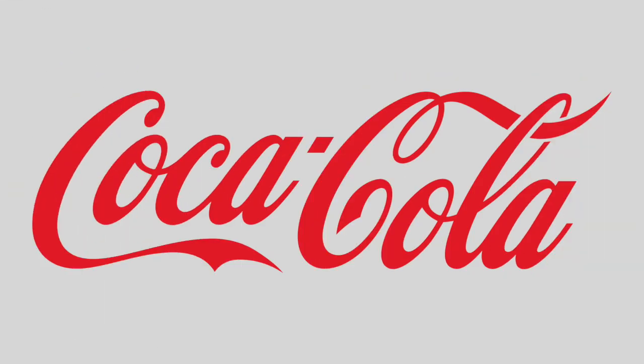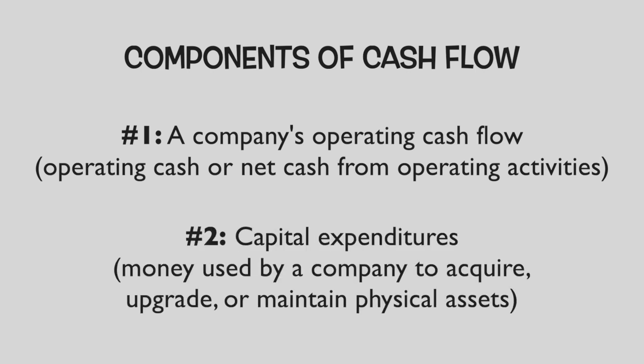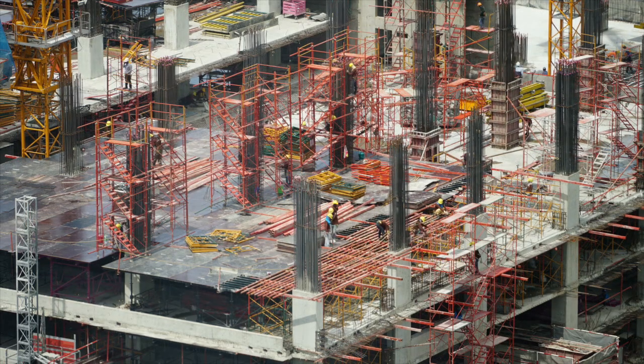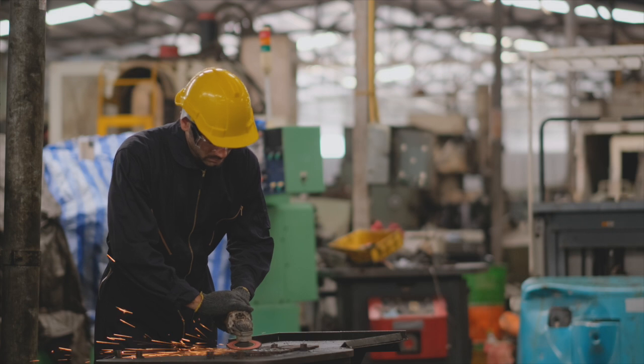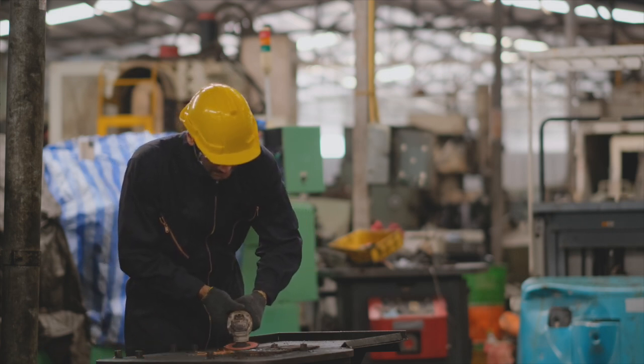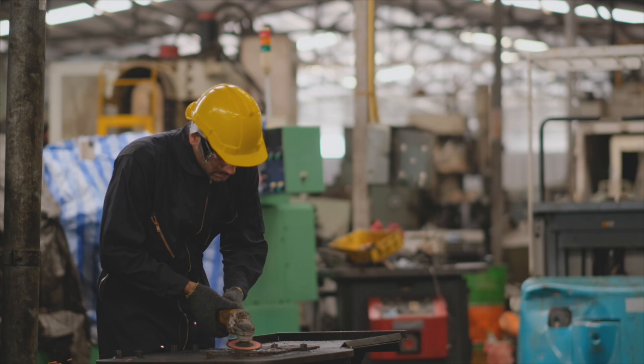Let's use Coca-Cola as an example to show how to calculate cash flow. To calculate any company's cash flow, we need two numbers: operating cash flow — also referred to as net cash from operating activities — and capital expenditures. Capital expenditures, or CAPEX for short, is the money used by a company to acquire, upgrade, and maintain physical assets such as property, plants, buildings, technology, or equipment. Making capital expenditures can include repairing a roof, purchasing a piece of equipment, or building a new factory. You can easily find these numbers in a company's annual report and financial statements.